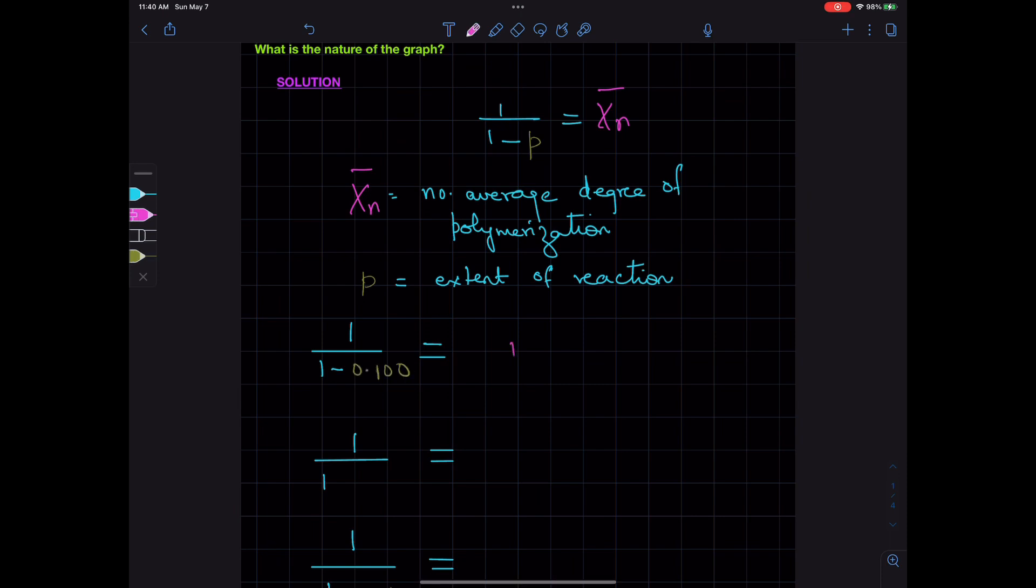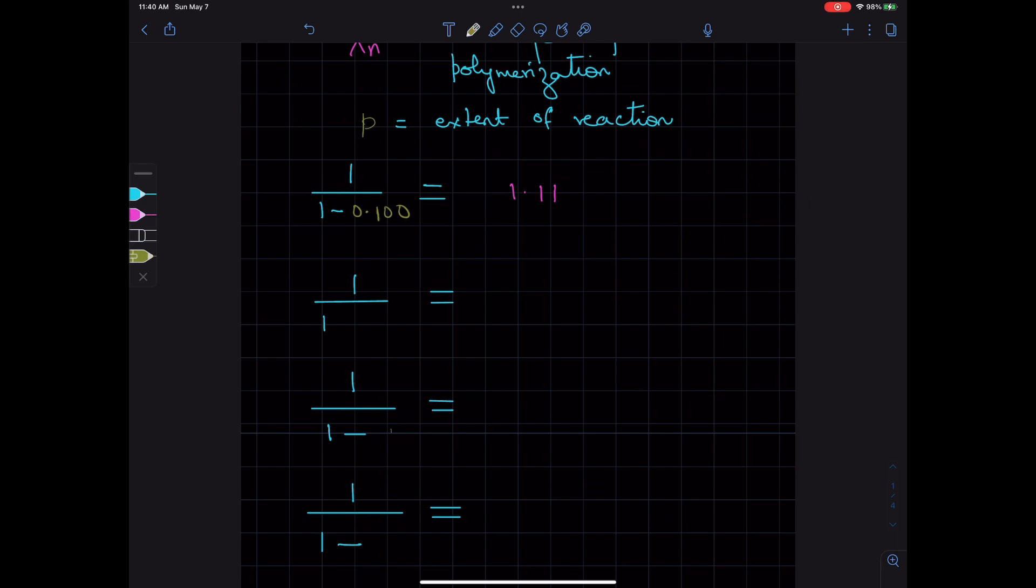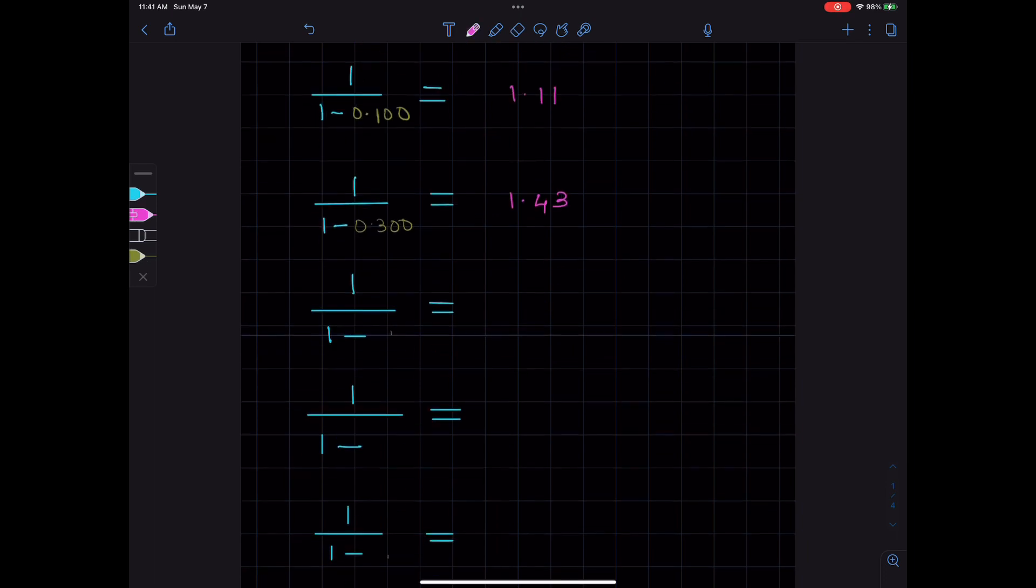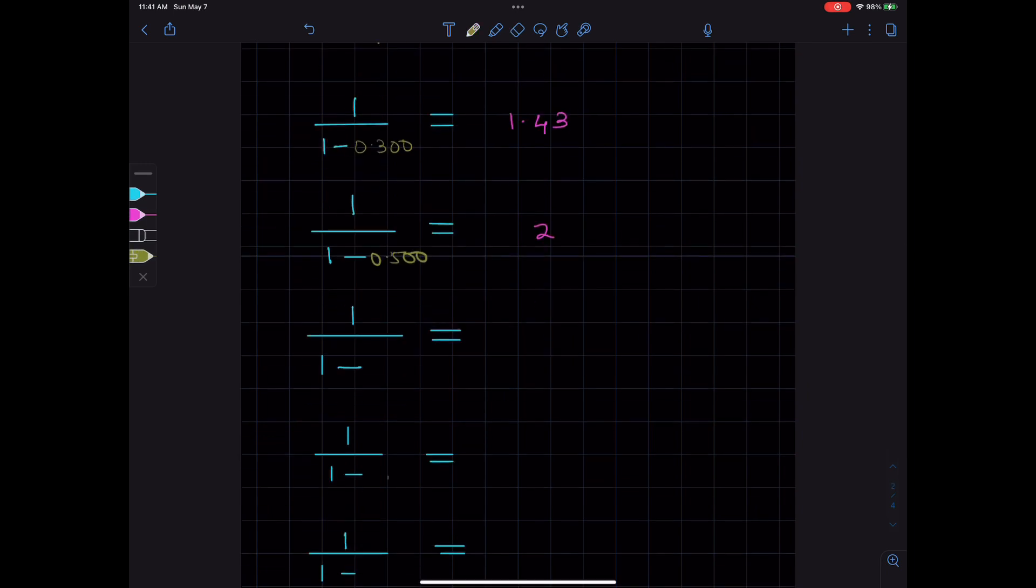Plugging in the values, we get 1 over 1 minus 0.1 is 1.11, 1 over 1 minus 0.3 is 1.43, 1 over 1 minus 0.5 is 2, 1 over 1 minus 0.8 is 5.